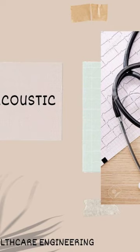The acoustic stethoscope is probably the best-known stethoscope type. They operate on the transmission of sound from the chest piece to the listener's ear via an air-filled hollow tube. The chest piece usually consists of two sides.